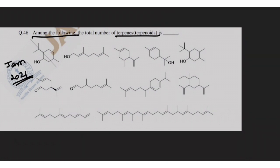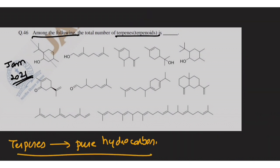Basically let me first tell you the difference between a terpene and a terpenoid. Terpenes are basically pure hydrocarbons and terpenoids are oxidized forms. So terpenoids contain oxygen.